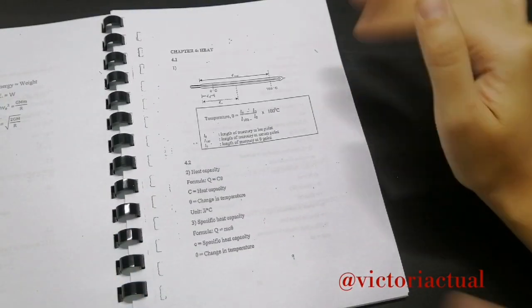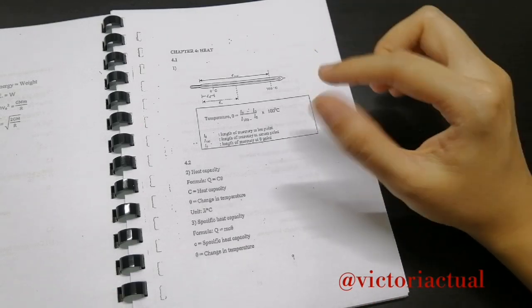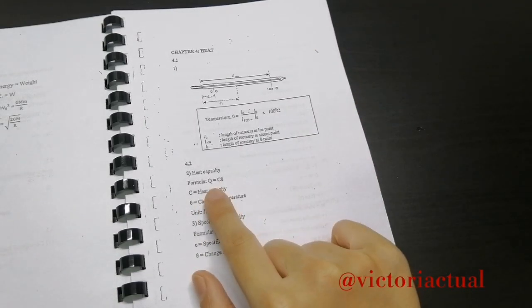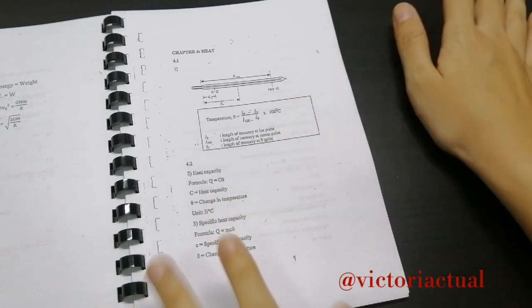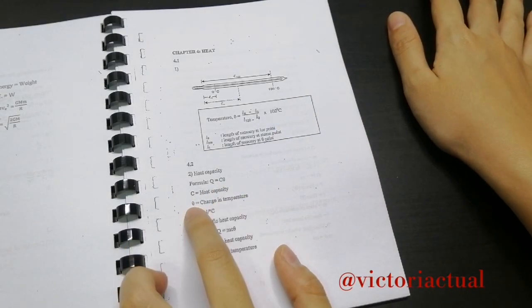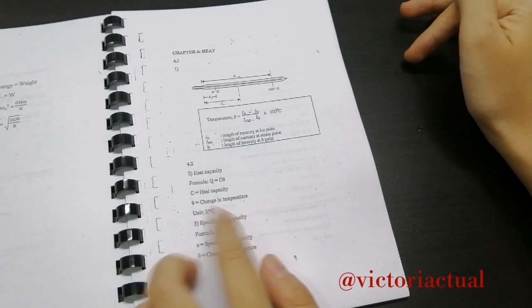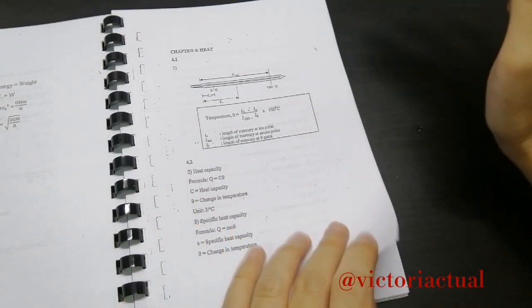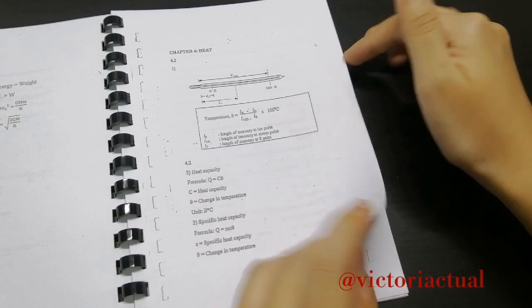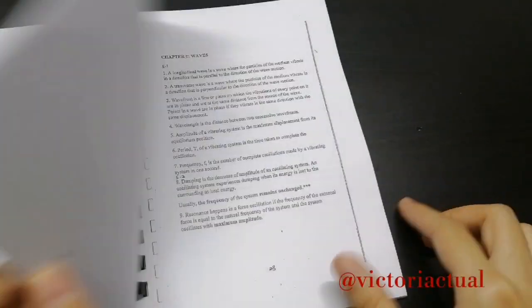And I also make sure to list down what each variable means. For example, this Q equals C theta. So C is heat capacity, theta means change in temperature. And I also make sure to include the unit as well so it's easier for you guys to know.